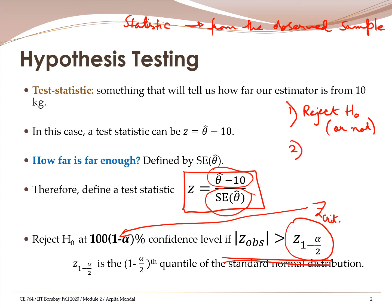The second key point: any test statistic should tell us the difference between the estimate and the value we are testing against, but that is not enough. How far is far enough? How large a difference is large enough? This concept is important and is determined by the standard error. So theta-hat as well as the standard error of theta-hat are both important for the test statistic.